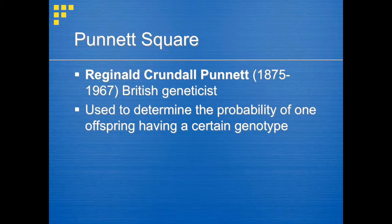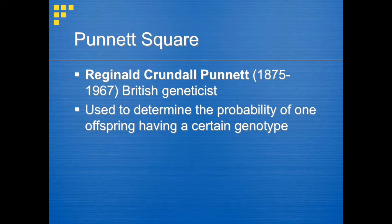We can use something called a Punnett square to explain why you have the eye color or other characteristics that you do. Punnett squares were devised by a British geneticist named Reginald Crundell-Punnett. Punnett squares can be used to determine the probability of offspring having a certain genotype. But what's a genotype?